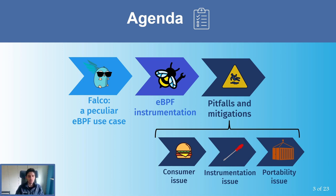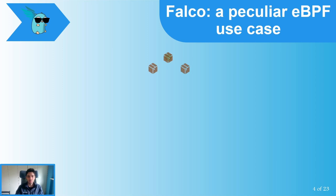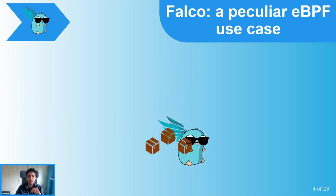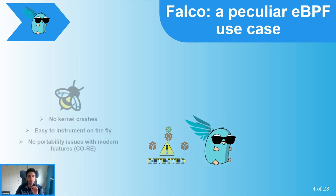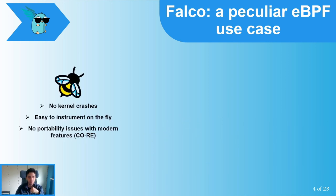As you can see from this animation, Falco is an open-source project that basically sniffs all your system searching for malevolous actions. To perform this inspection, it uses two main methods: a BPF probe and a kernel module. Let's try to understand the benefits that the BPF technology brings to the table in regards to the kernel module.